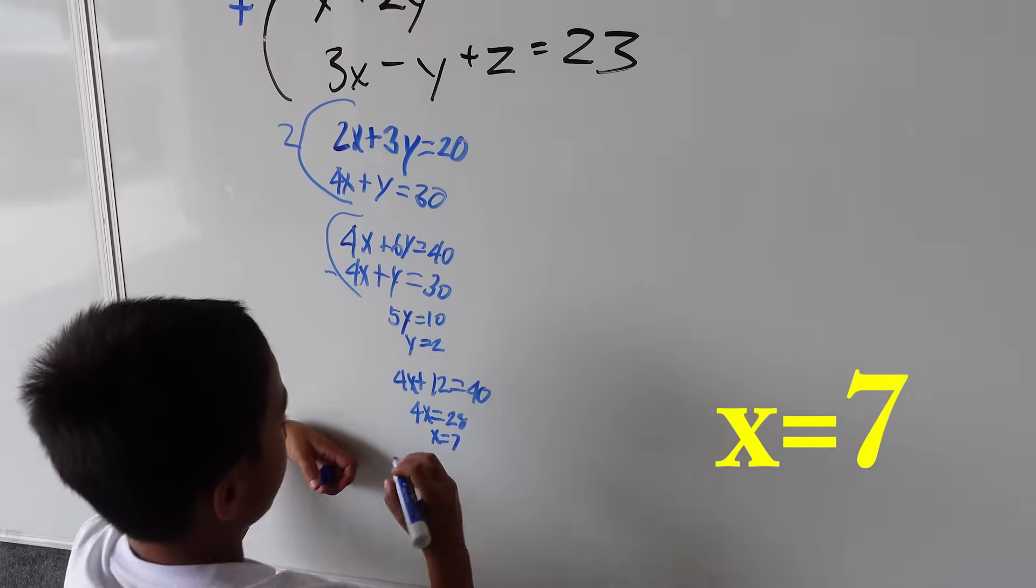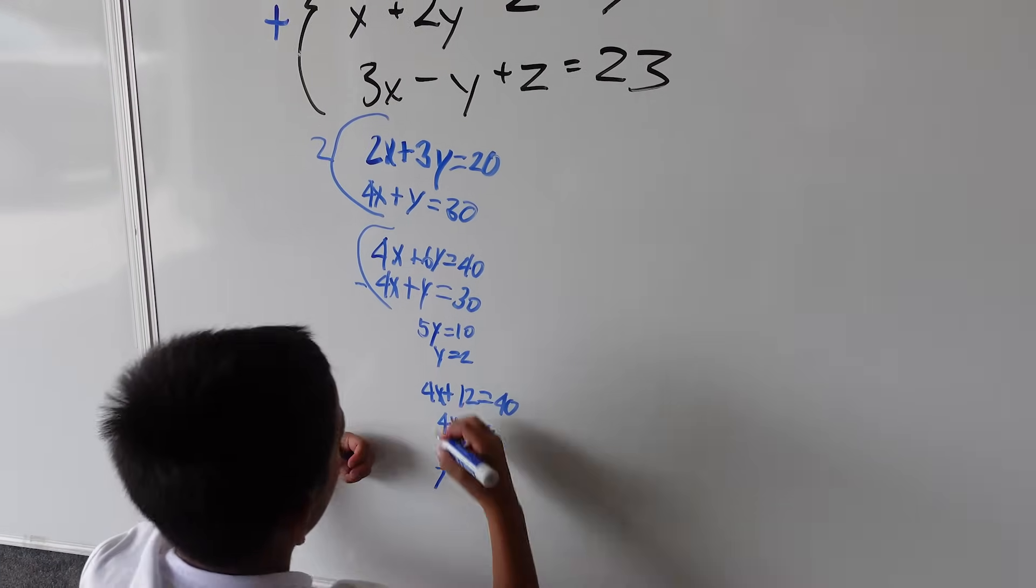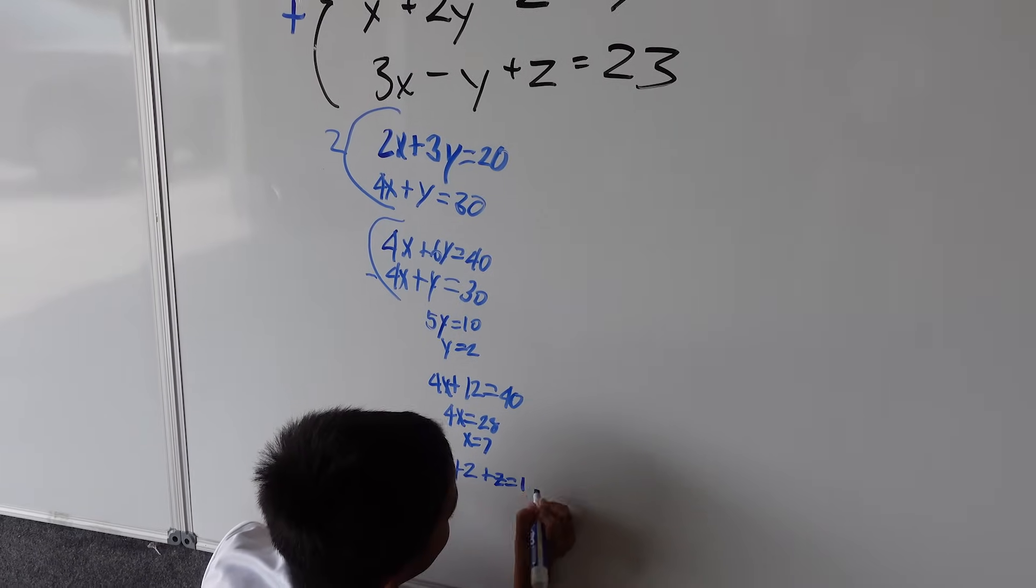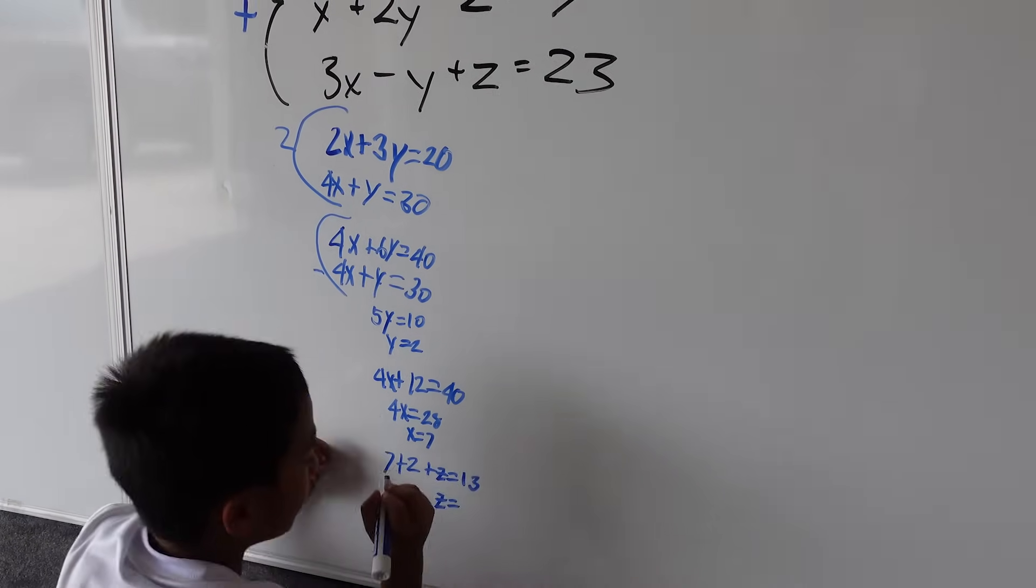Then you go back to the original equation and substitute: 7 for x, plus 2 for y, plus z equals 13. Solve for z and you get z equals 4.